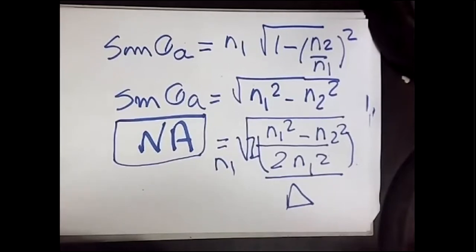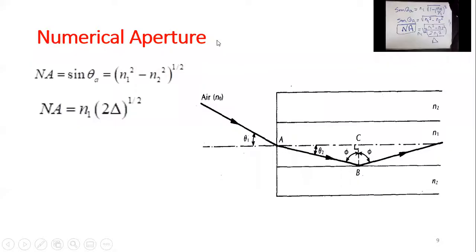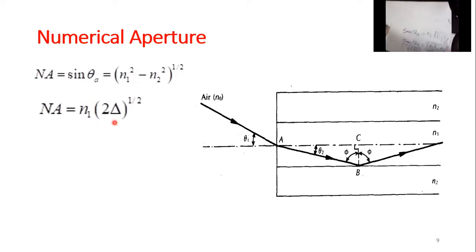As you can see on the slides, the numerical aperture is N1 * sqrt(2*delta), which is the simplified form. Mathematically both are identical. This is the basic theory of how total internal reflection operates inside an optical fiber's core material.